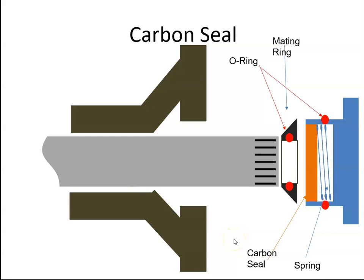When a completely airtight seal is required, we would use a carbon seal. A carbon seal is made up of a block of carbon, some springs, and a mating ring.